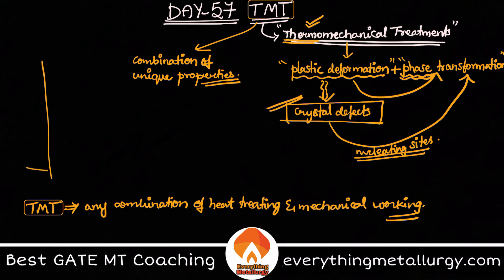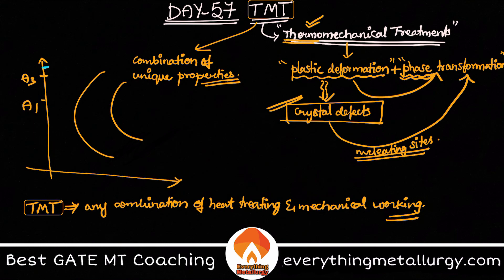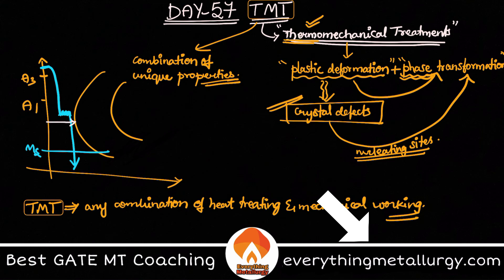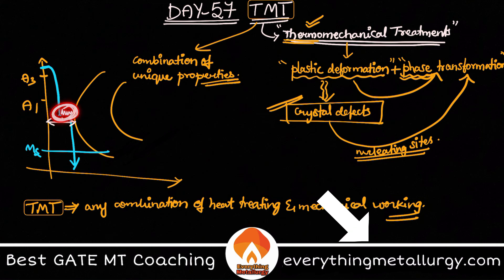Now let us look at the TTT curve. Taking some eutectoid steel, this is my temperature A3 and this is A1. If I am heating to a temperature above A3 — above the upper critical temperature — and cooling to some temperature below my recrystallization temperature or below A1, and I am performing deformation there and then cooling back to room temperature so that I form martensite. This is the TMT process. The incubation period is the time period where the start of pearlitic or bainitic transformation begins. The deformation is performed isothermally here, and the phase transformation is also affected.